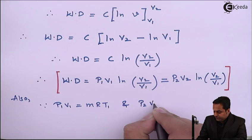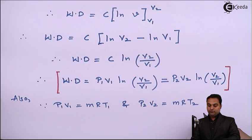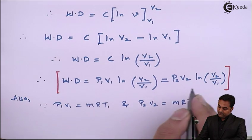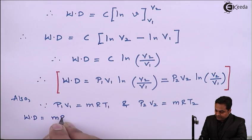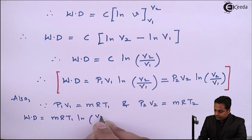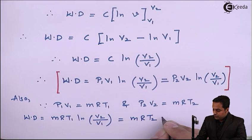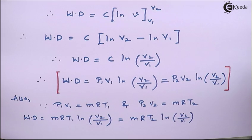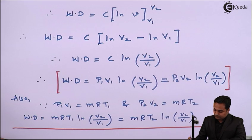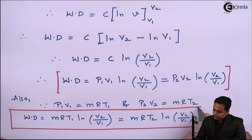Since P1V1 = mRT1 and P2V2 = mRT2 from the characteristic gas equation, we can substitute P1V1 in the formula. Therefore work done = mRT1·ln(V2/V1), which equals mRT1·ln(V2/V1). This is another form of the work done formula for the isothermal process.